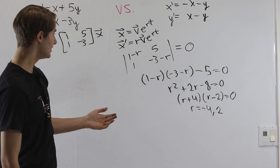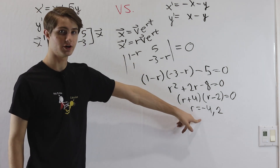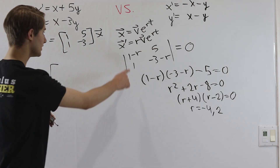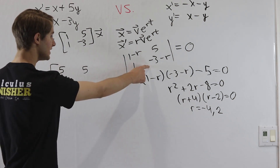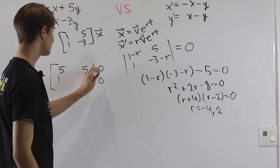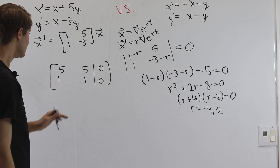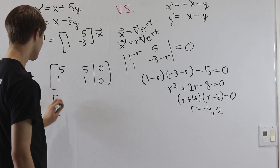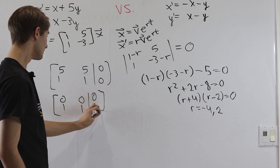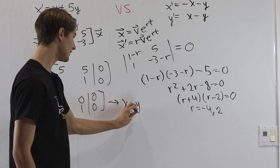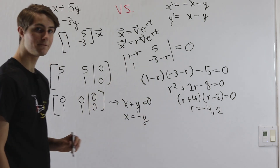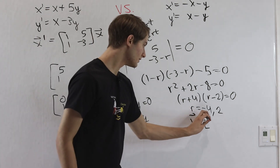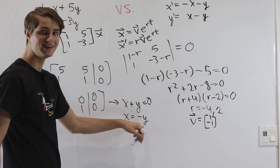Now we need to find our eigenvectors. We plug in each eigenvalue for r and solve. For r equals negative 4: the matrix becomes 5, 5, 1, 1 augmented with 0. The top and bottom rows cancel, leaving x plus y equals 0, so x equals negative y. The eigenvector corresponding to r equals negative 4 is 1, negative 1.